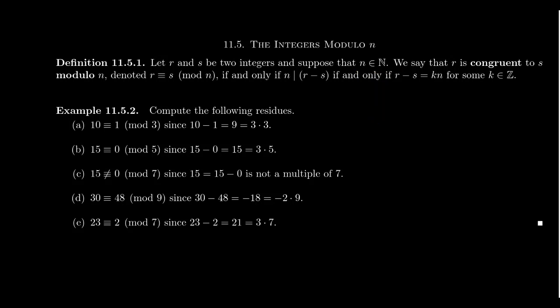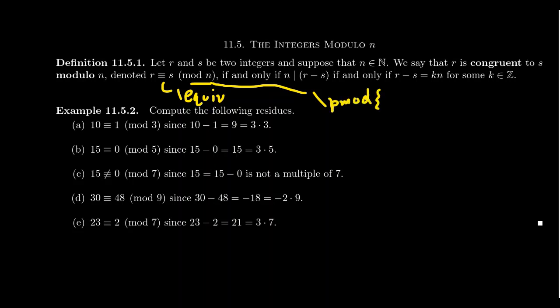For typesetting this in LaTeX, the congruence symbol is \equiv, short for equivalent. For the modulus notation, you want to use \pmod{n}, which takes your modulus as an argument. This command gets the spacing and parentheses just right, making it look correct in your LaTeX documents.